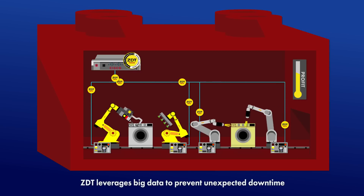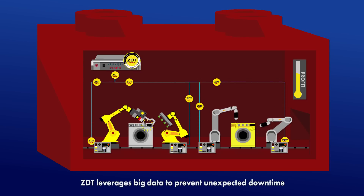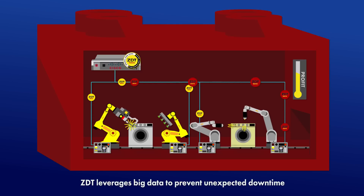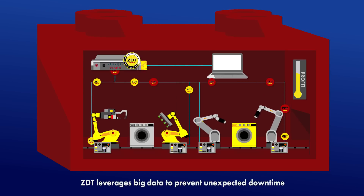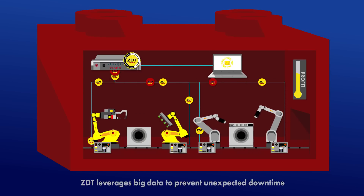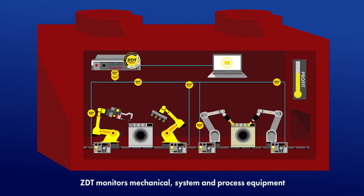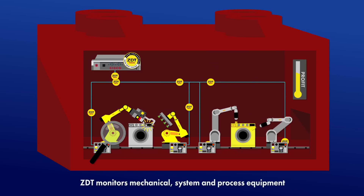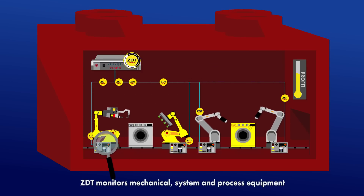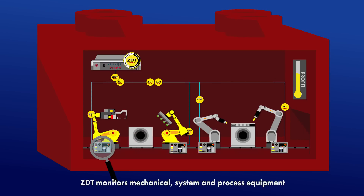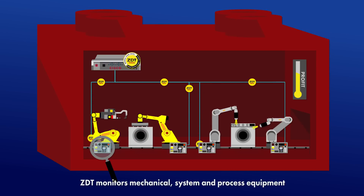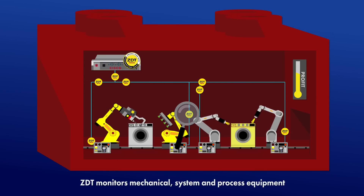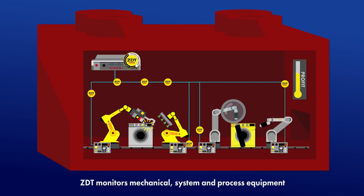ZDT leverages the power of big data to monitor health and maintenance requirements of FANUC products to prevent unexpected downtime. For example, ZDT collects information from FANUC products, monitors mechanical components and system controllers, as well as process equipment such as servo-weld guns and paint components.